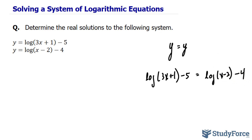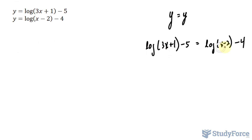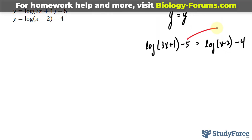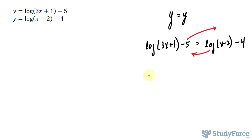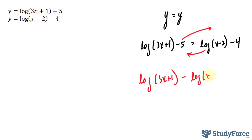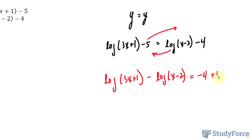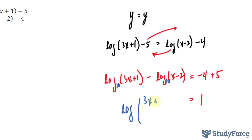From here, I want to group together the log terms exclusively on one side and the numbers on the other side. So this constant will go to the right and that will go to the left, because eventually we want to use the rules of logarithms to combine those log terms. I have log(3x + 1) minus log(x minus 2) is equal to negative 4 plus 5, which simplifies to positive 1.